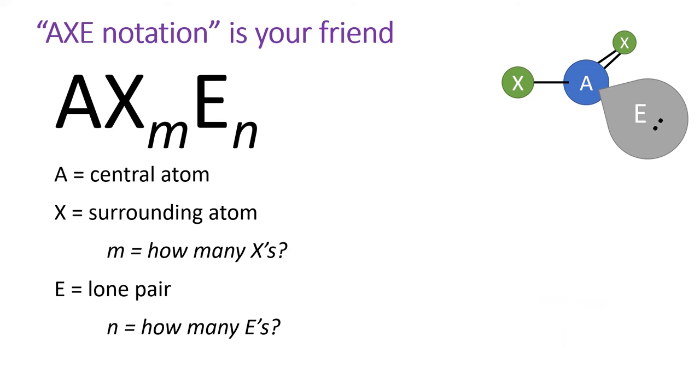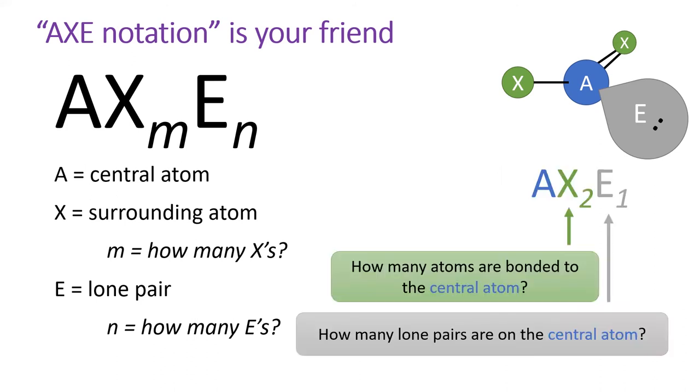A stands for the central atom. X stands for atoms bonded to that central atom, and E stands for the number of lone pairs on the central atom. Use subscripts after the letters to indicate how many bonded atoms and lone pairs there are. For instance, in this image, the central atom is bonded to two other atoms and has one lone pair. The AXE notation is AX2E1.